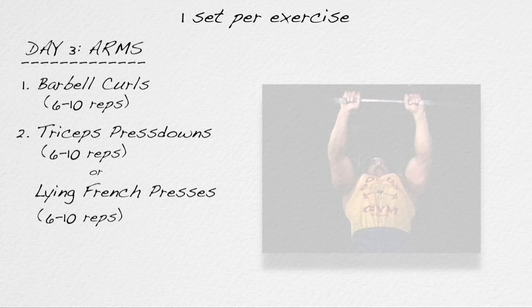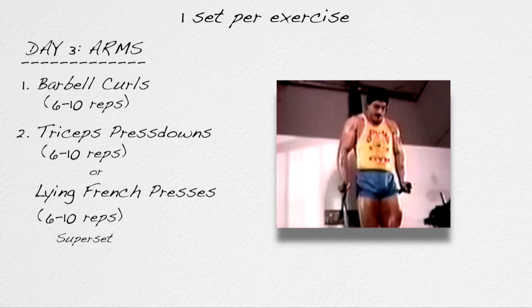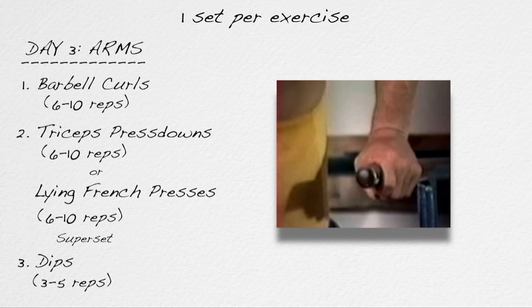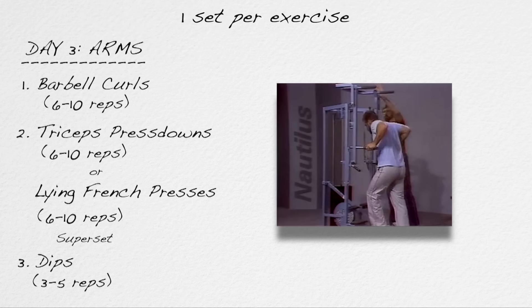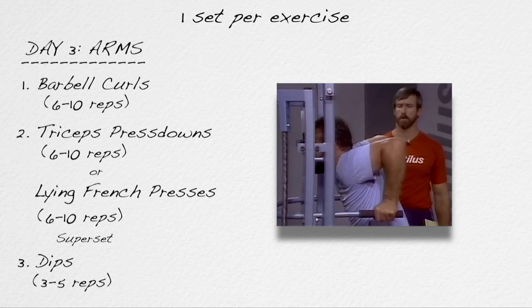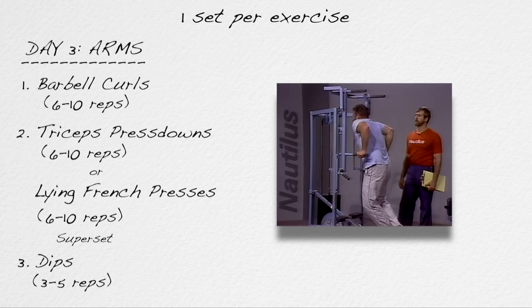Immediately after the press downs, in superset fashion, proceed to dips between parallel bars for three to five reps to failure. If you can do more than five reps with your body weight, add weight. If you can't do any positive full-range dips, place a chair or bench between the dip bars, stand up into the straight arm locked-elbow position, and lower yourself in negative fashion, taking several seconds to reach the bottom. Then stand up into the straight arm position and do it again. When you can perform up to ten negative dips with each rep taking several seconds to complete, you should be able to do regular full-range dips.